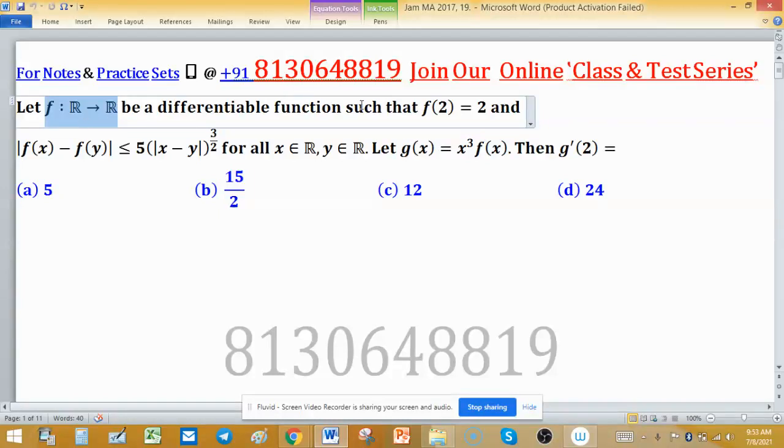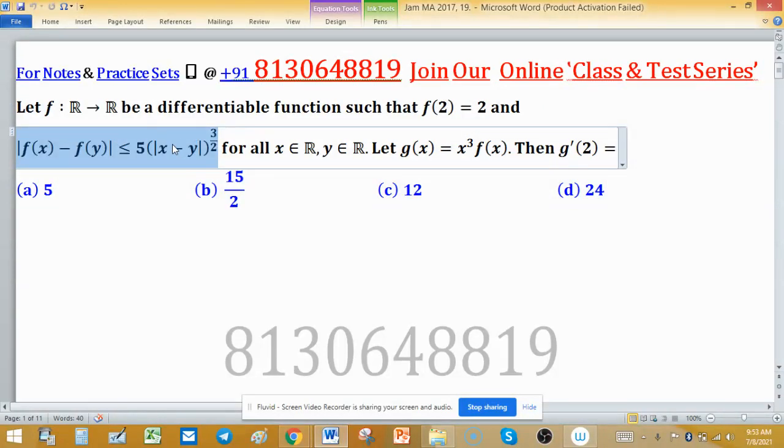Let f: R → R be a differentiable function such that f(2) = 2. This condition or inequality is given on the difference of images: |f(x) - f(y)| for all x belongs to real numbers and y is also from real numbers. Let g be another function defined as g(x) = x³f(x).